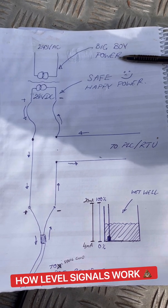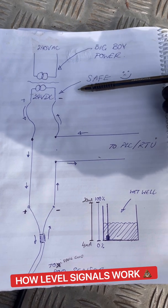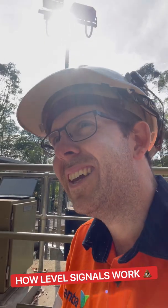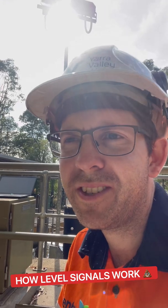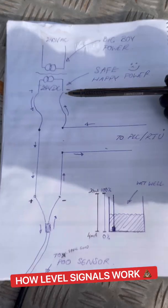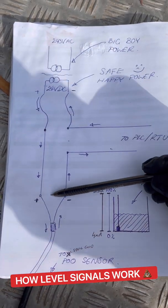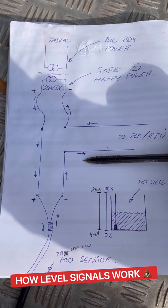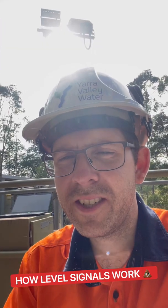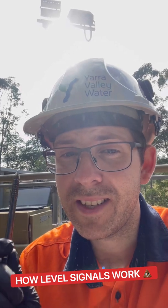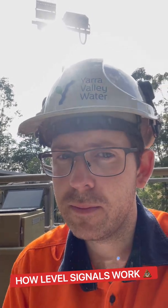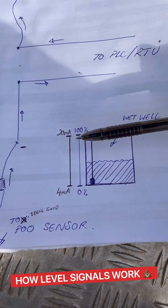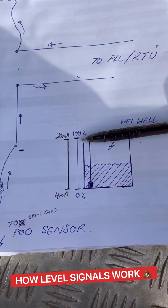Using big boy power, we can convert it down using a transformer into some safe, happy extra-low-voltage power. I'm going to be using conventional current flow for this. We can apply this power to our sensor, which will create a current through the sensor — but this is not just some random current, it's a special current.